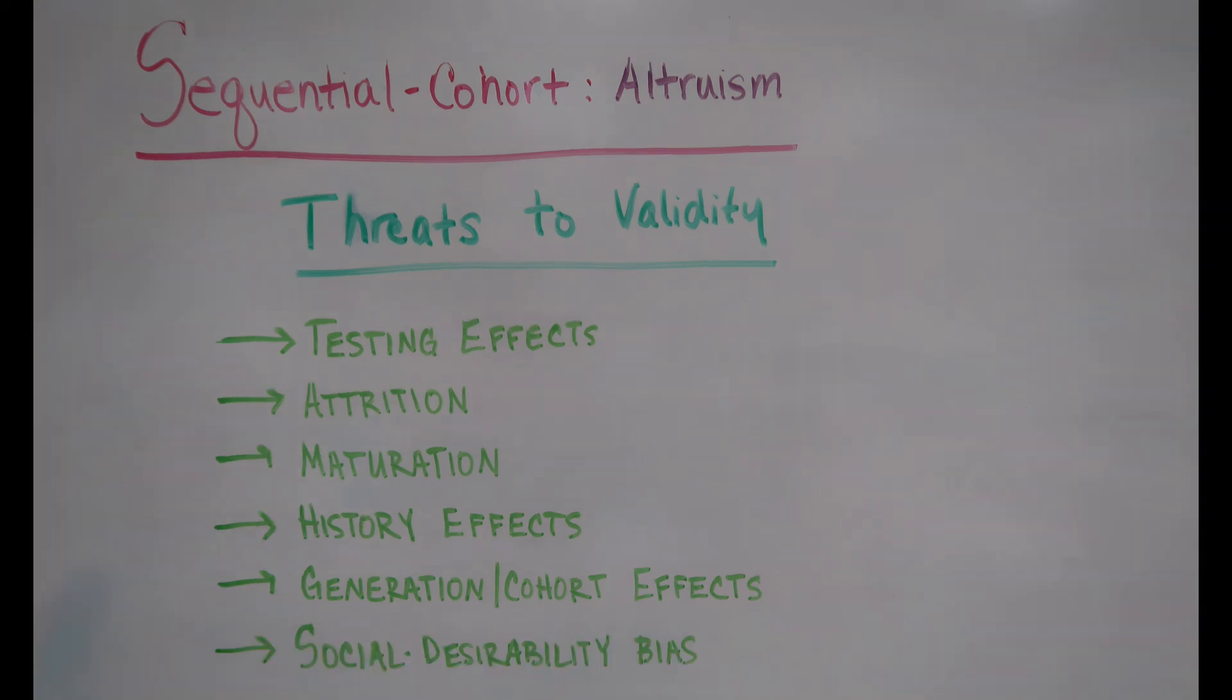Finally, social desirability bias, or the tendency to answer or act in the most favorable way viewed by others, is a large concern with self-reported data. We plan on counterbalancing this bias by using a self-report altruism scale that's been scientifically validated and utilized in multiple research experiments.